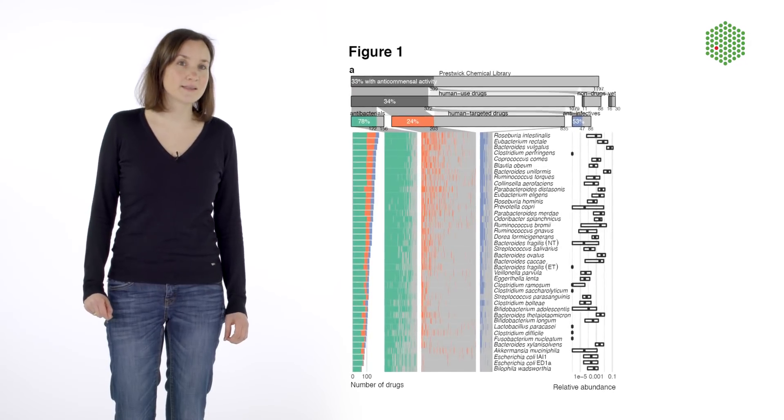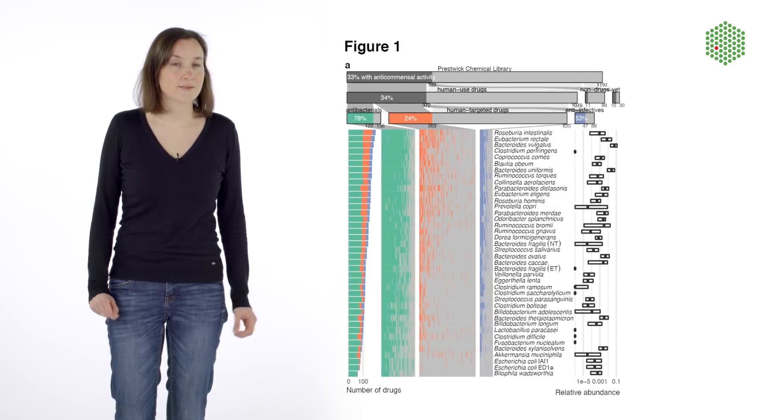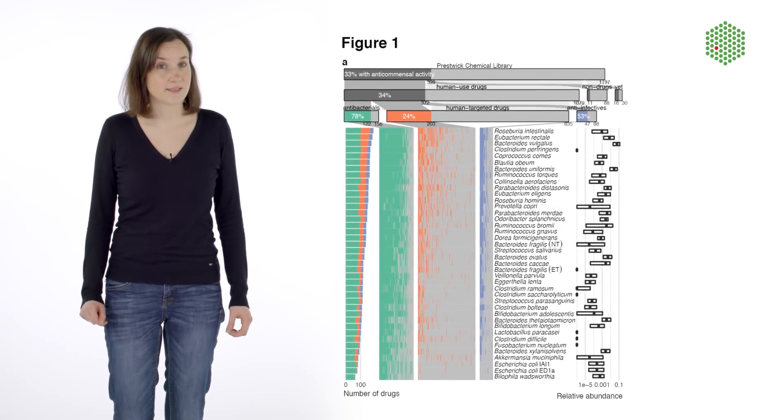As expected, we find that a lot of antibiotics in our screen had an effect on human gut commensals. But what was more surprising is that a quarter of the human-targeted drugs, with no direct target in bacteria, actually had a big effect on human gut commensals.